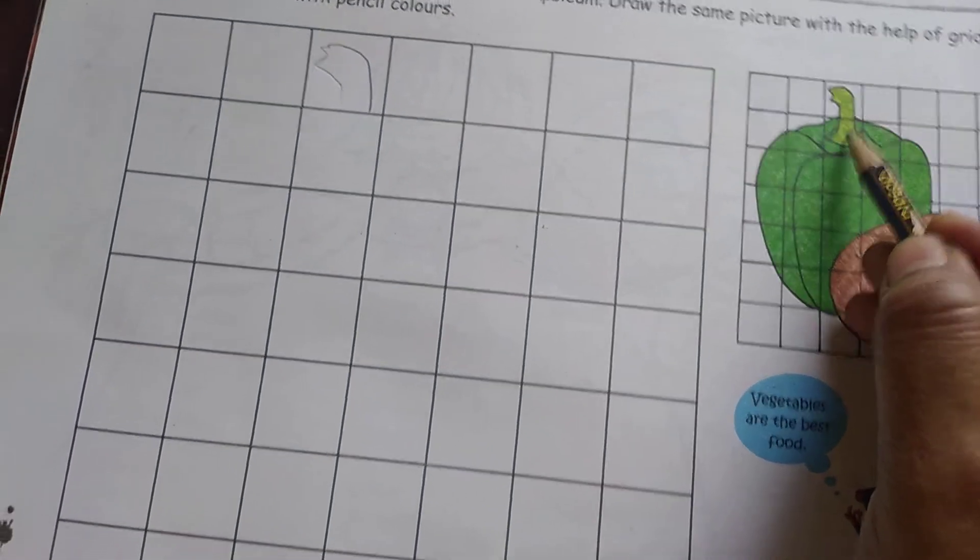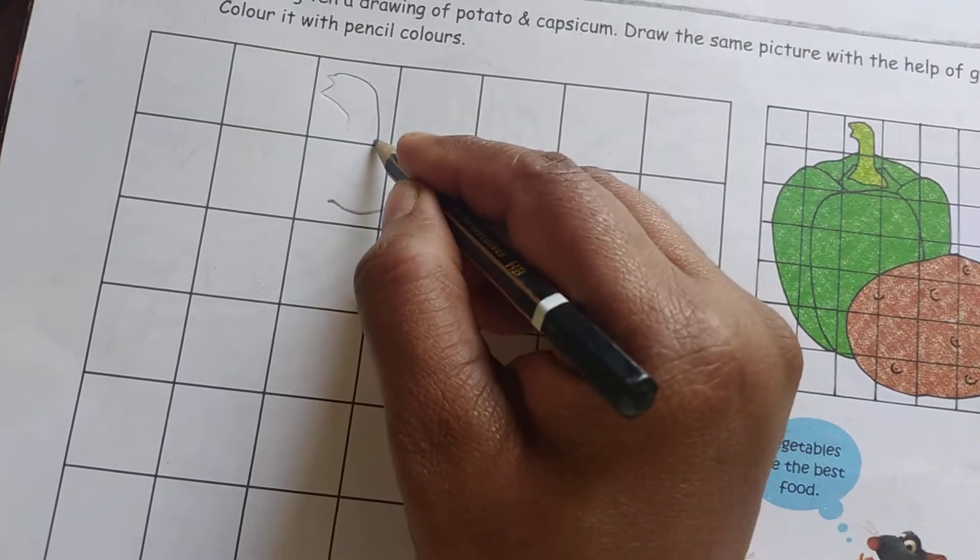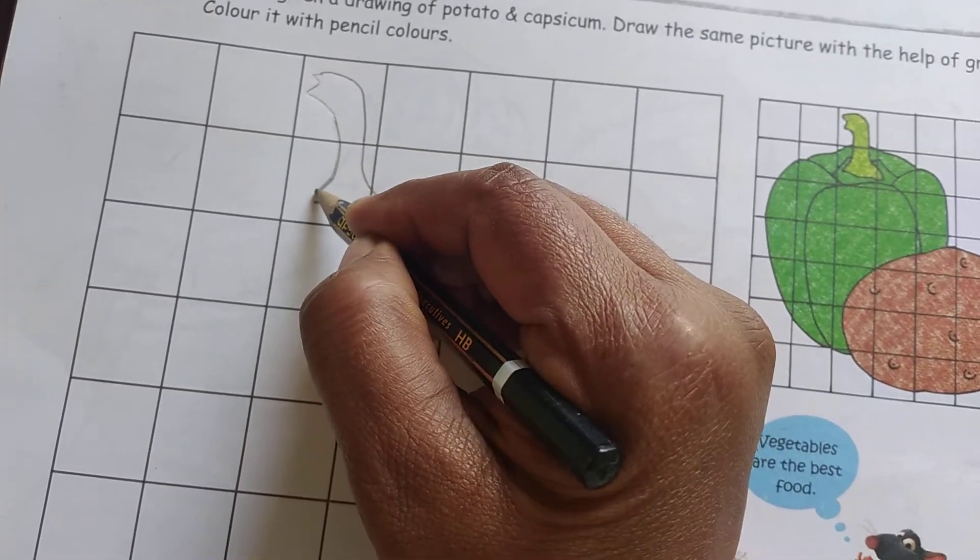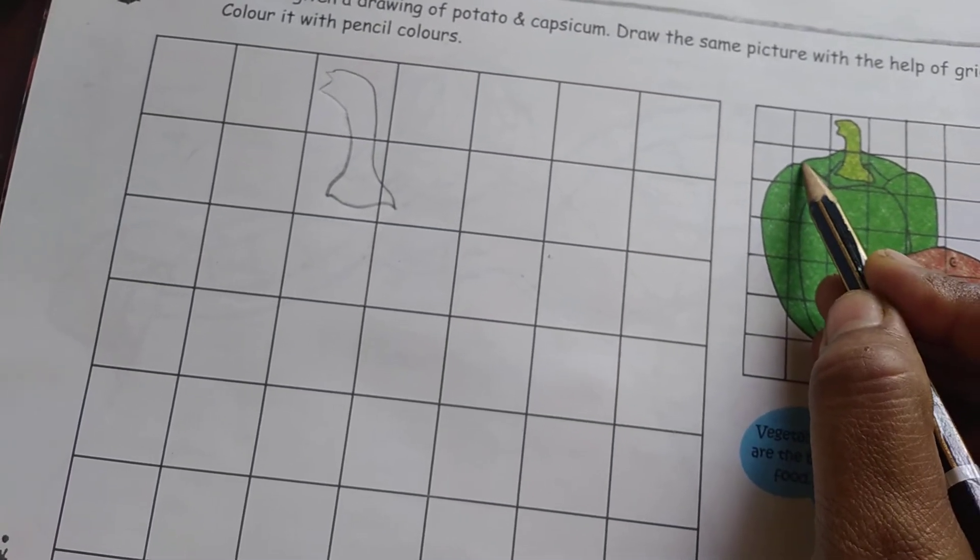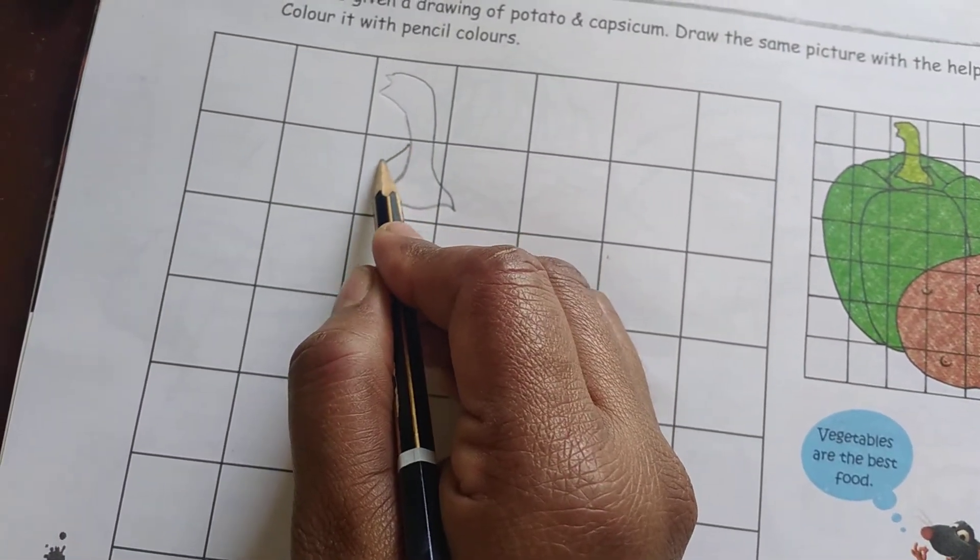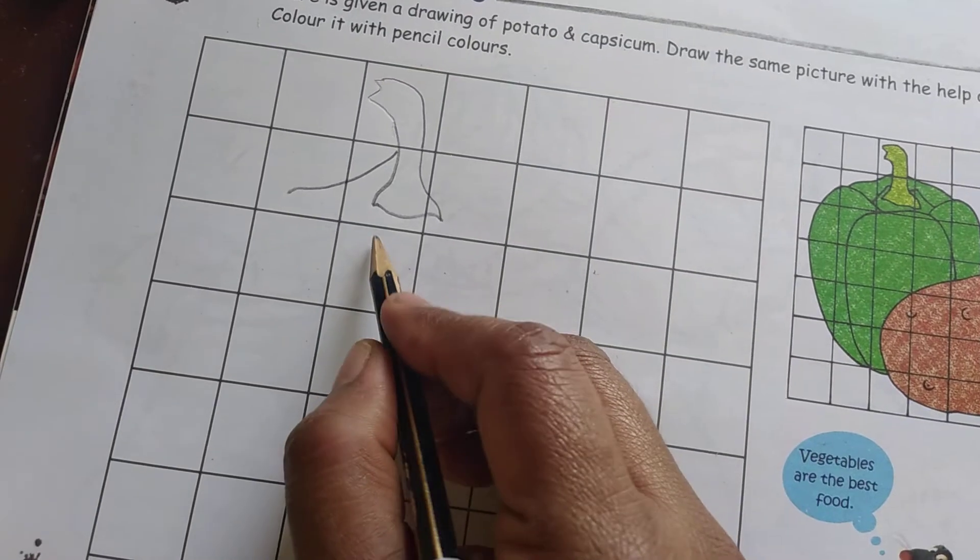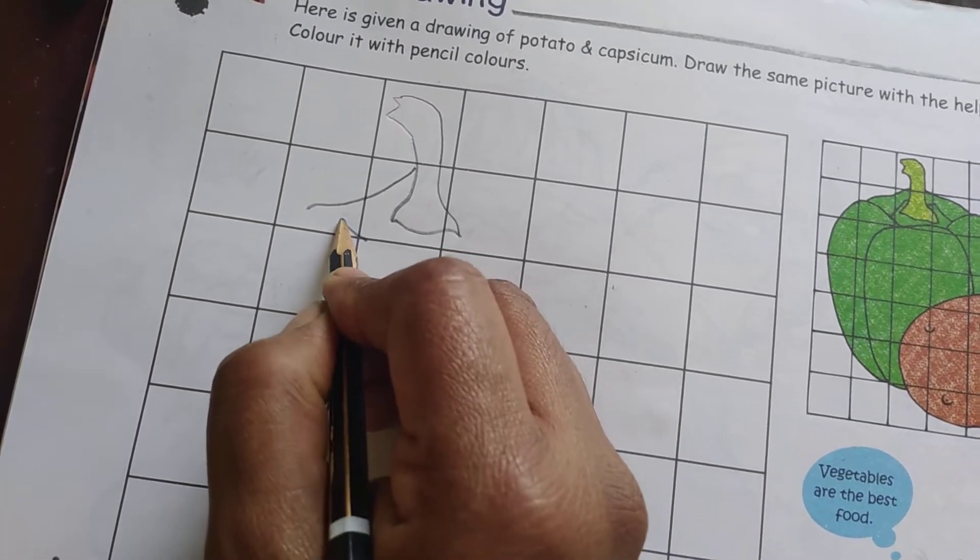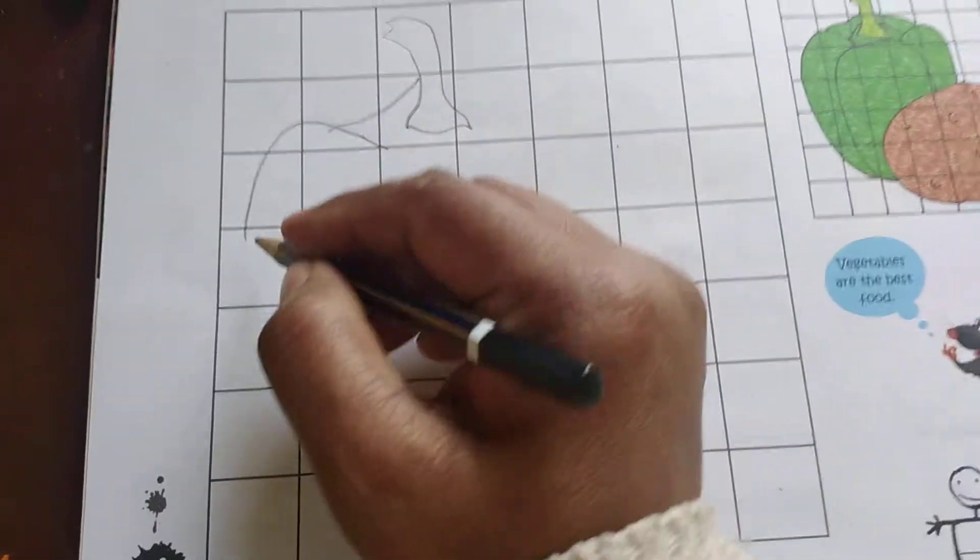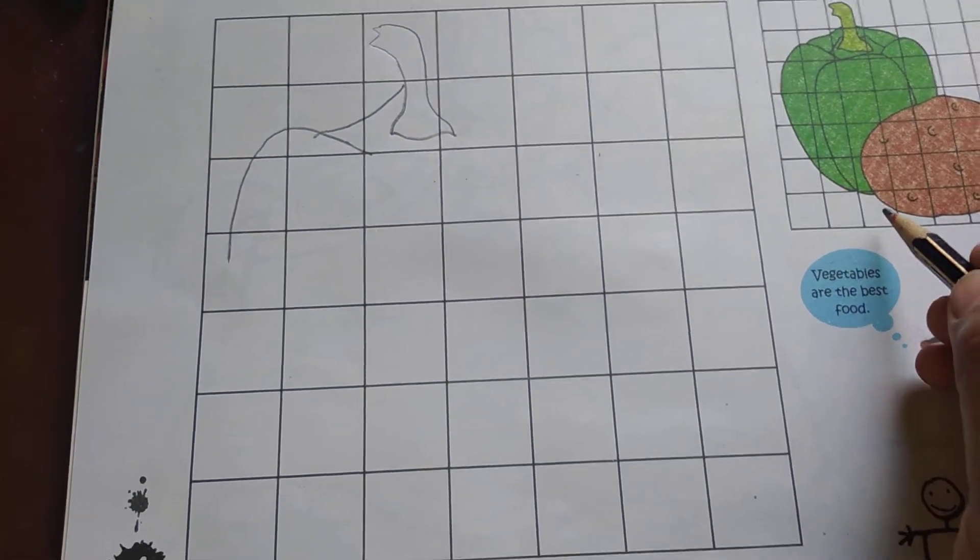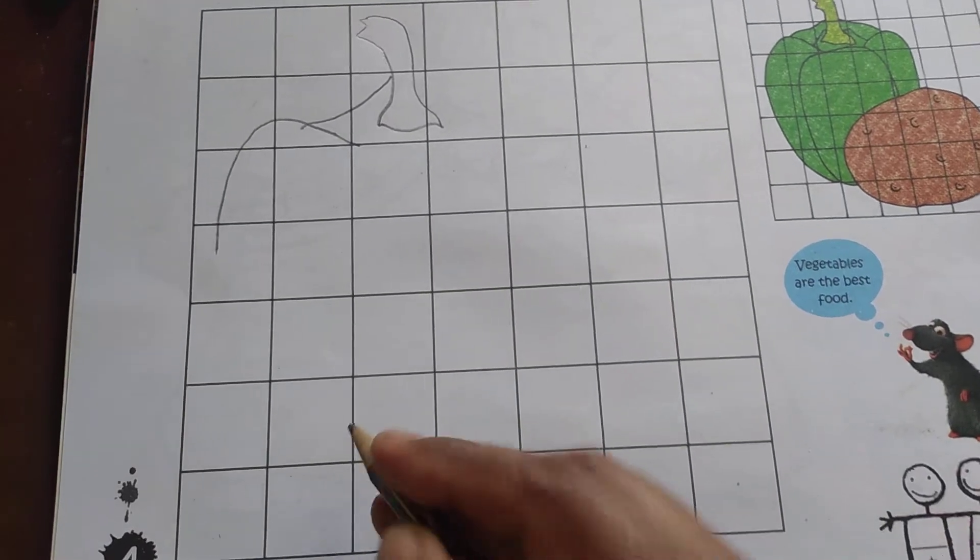From here first second box till here it will come, so like this we have to do. Then it will start from here, this line, it will end here, then it will start from here. To end first second, second box corner, first second box corner it will be.